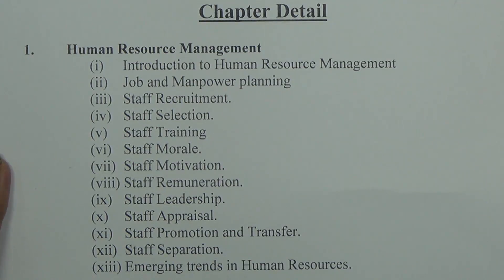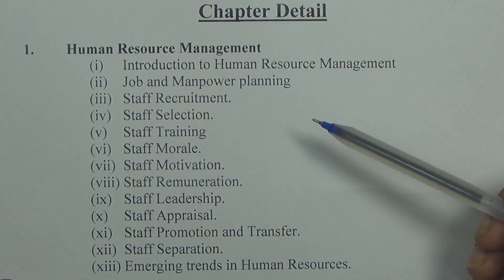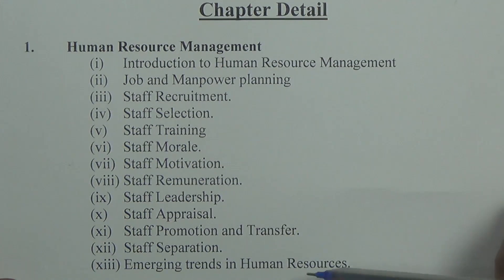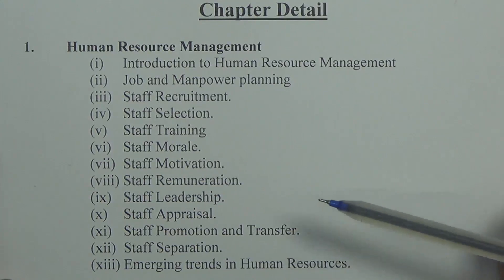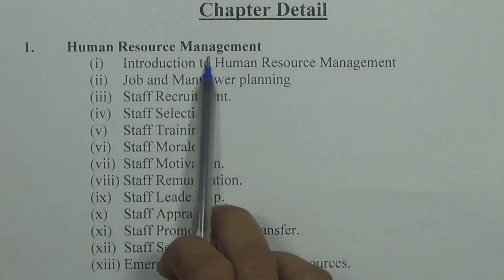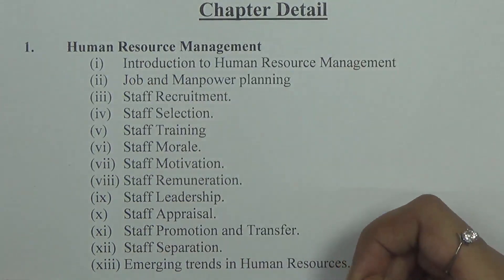You have a total of 5 chapters in your Business Studies book. Chapter number 1 has at least 13 subdivisions. The first chapter is Human Resource Management, and these are the 13 important topics you need to study for your exam.